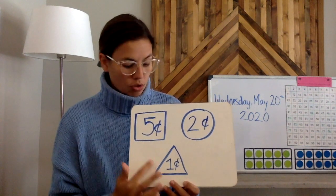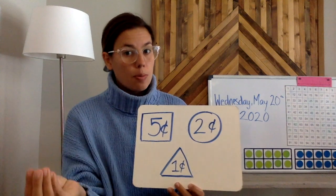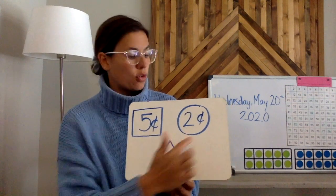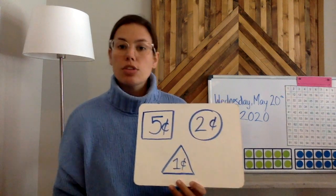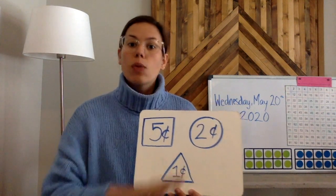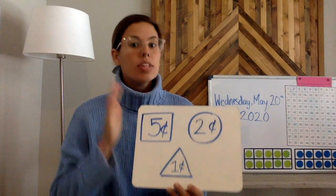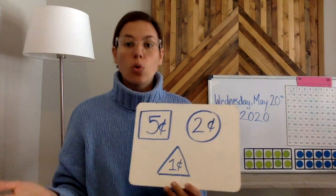For each triangle that you draw you're going to have to buy a triangle for one cent. For each circle that you draw you're going to buy it for two cents. And for each square that you draw you're going to buy it for five cents. When you're finished your whole picture you need to have spent 14 cents.